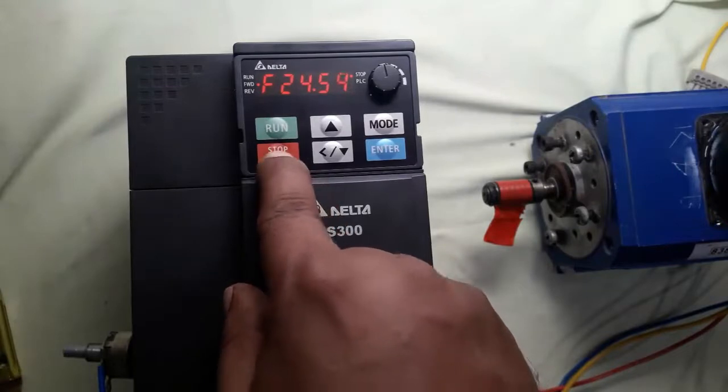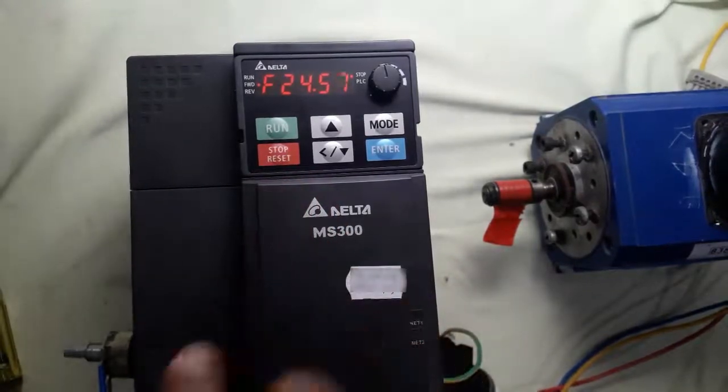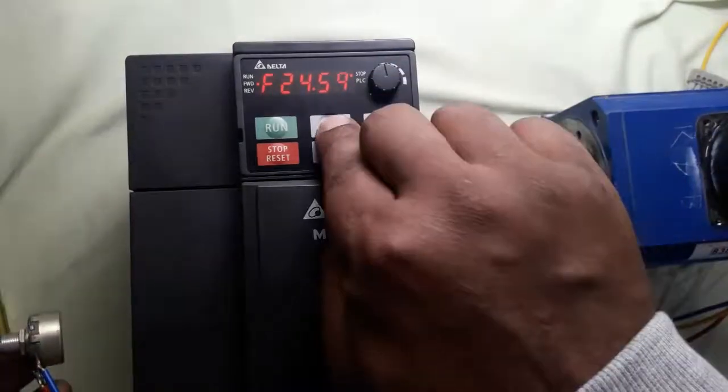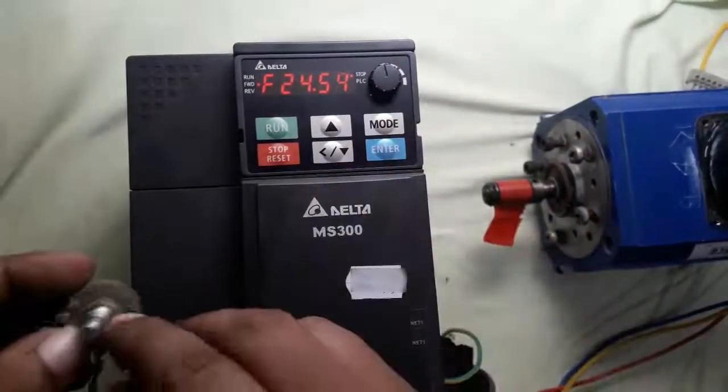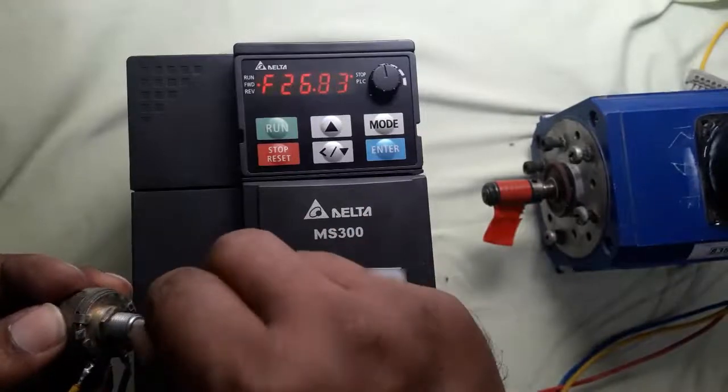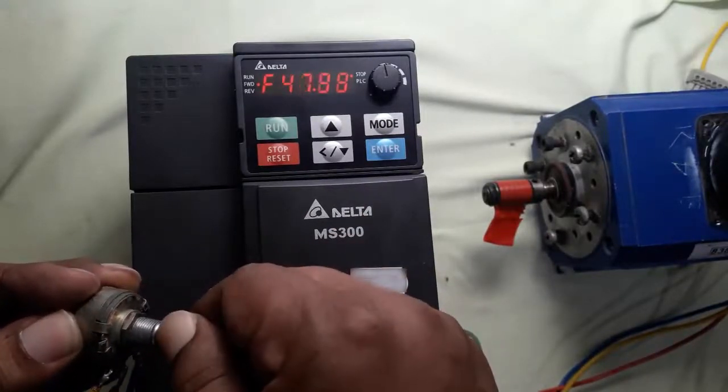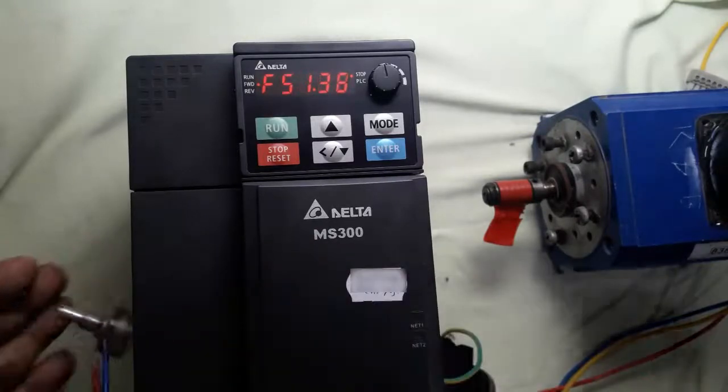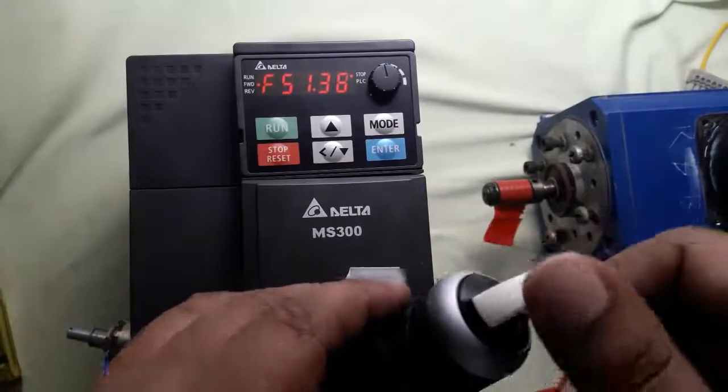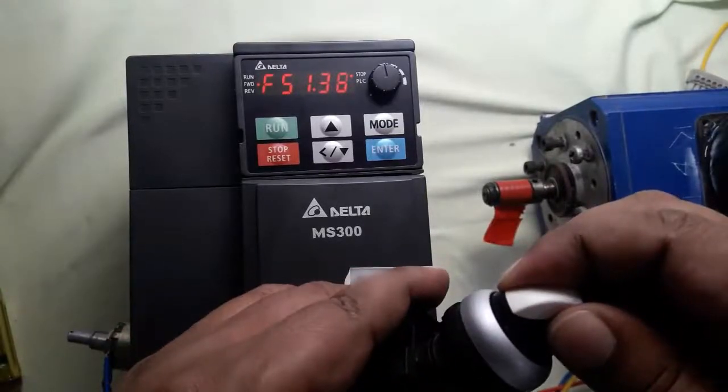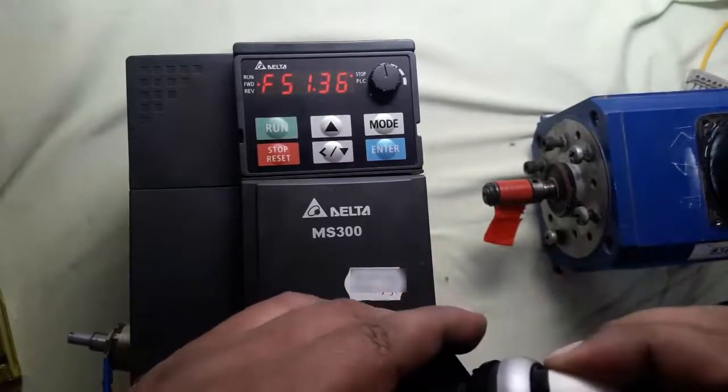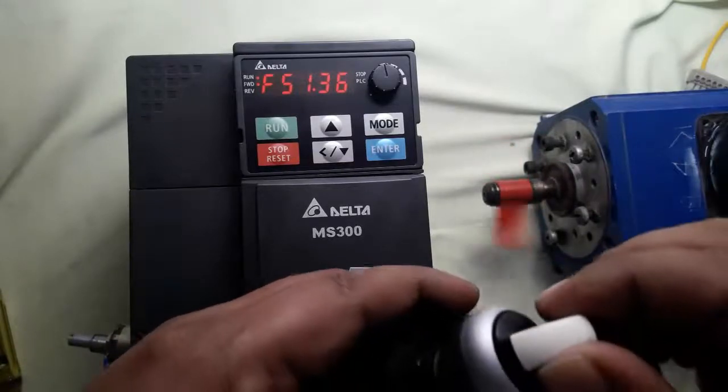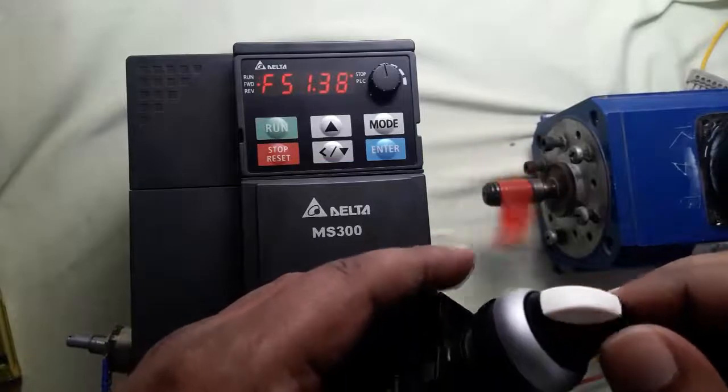So we now use potentiometer and selector switch for running the inverter. The potentiometer is working as a frequency command external analog input. And with the selector switch we run the drive and the motor is running.